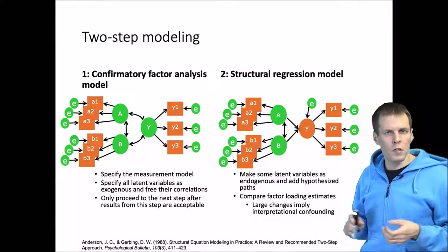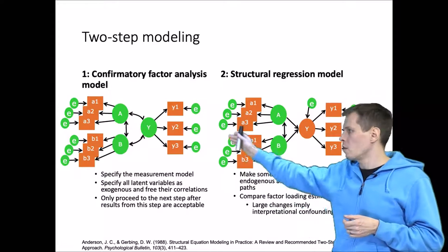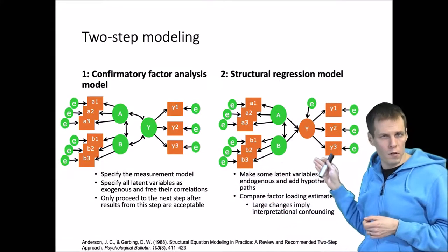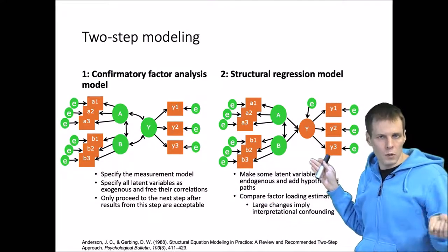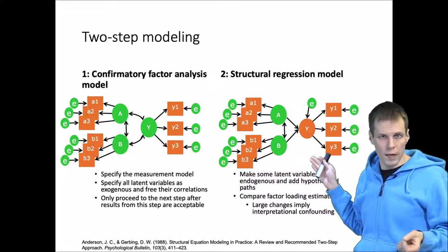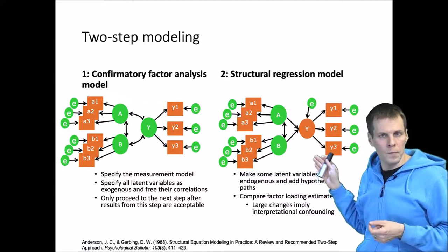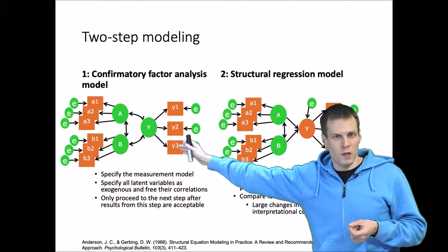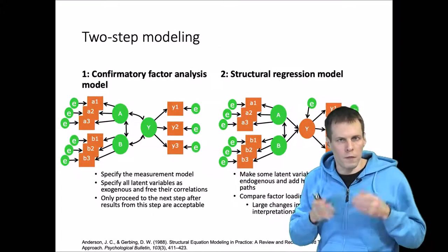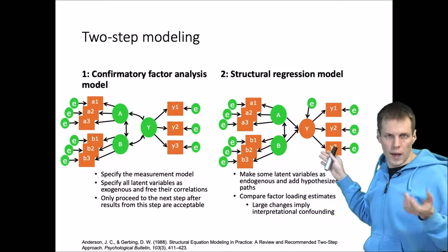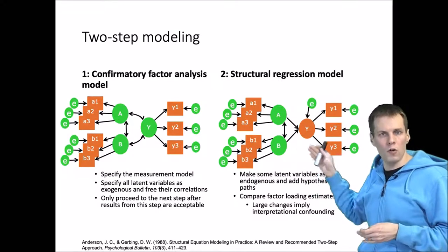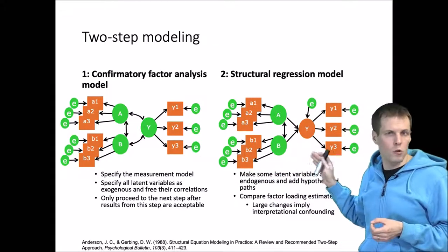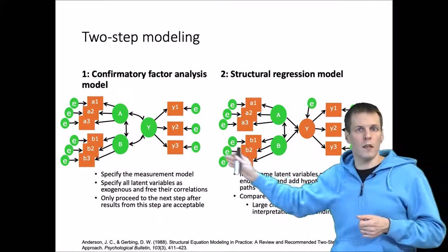Graphically, we first do the confirmatory factor analysis. Assuming we have Y as the dependent variable and A and B, they are first allowed to be freely correlated. Then we do a structural regression model where we specify that some of these latent variables are endogenous — meaning they depend on other latent variables. This structural regression model is nested in the confirmatory factor analysis model because the CFA does not constrain the correlations between factors, whereas the structural model can impose constraints.